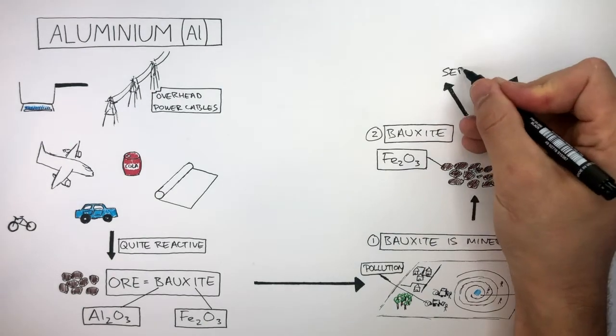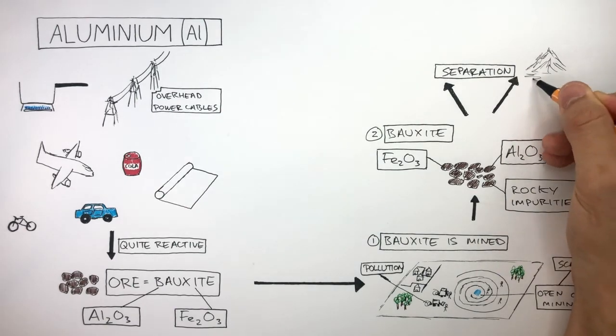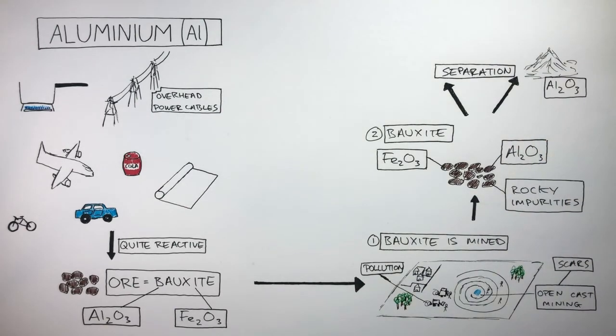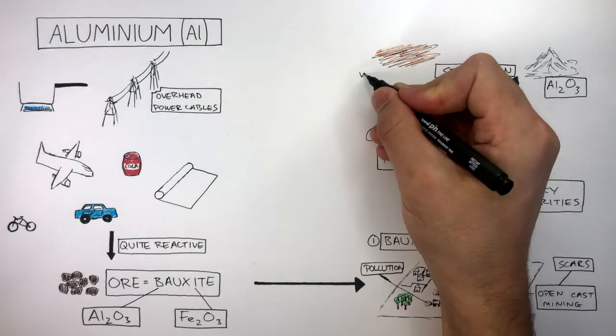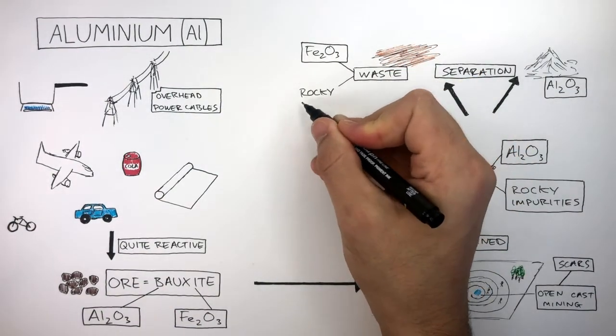The next stage is separation where the iron oxide, aluminium oxide and rocky impurities need to be separated. The bauxite is separated into pure white aluminium oxide and then a rust-coloured waste consisting of iron oxide and rocky impurities.